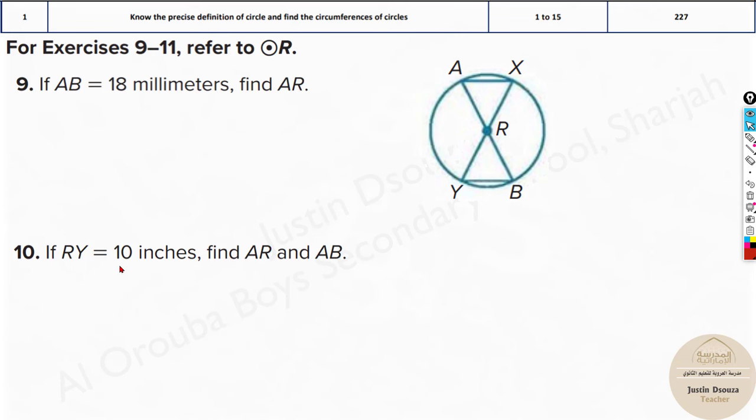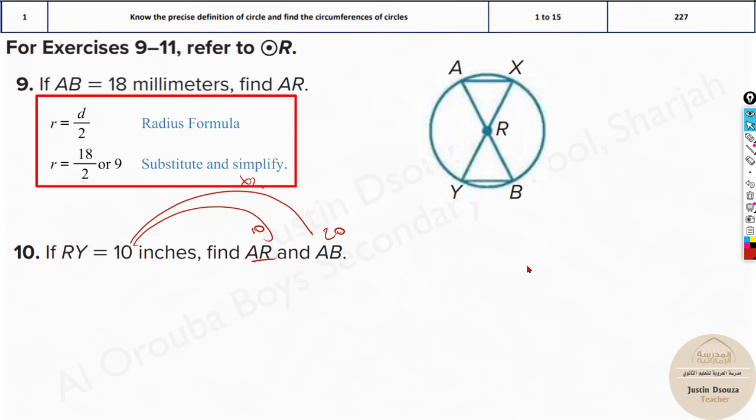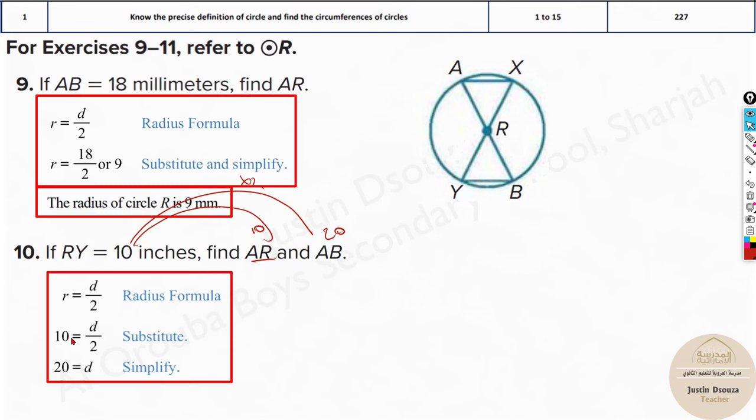If RY is equal to 10 inches, they have told RY, this one, the radius. What is AR and AB? The first one, AR, is the radius. They both are equal, so it will be 10. What about the diameter? The diameter will be multiplied by 2, so it will be 20 here. That's how we solve it up. And these are the answers.